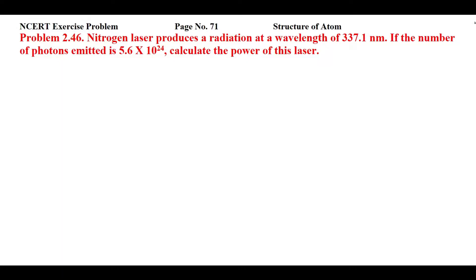This is NCERT exercise problem 2.46 from page number 71 of Structure of Atom. The problem states: a nitrogen laser produces a radiation at a wavelength of 337.1 nanometer. If the number of photons emitted is 5.6 into 10 raised to power 24, calculate the power of this laser. So we have a nitrogen laser producing radiation of wavelength 337.1 nm and we need to calculate its power.